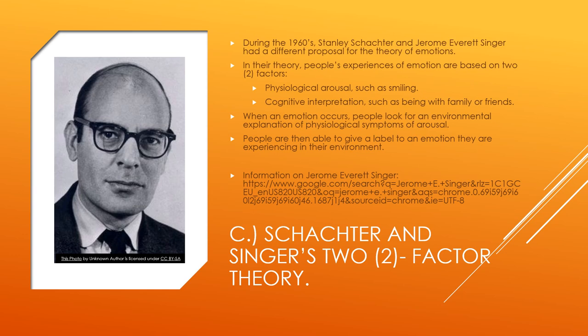The third theory is Schachter and Singer's Two-Factor Theory, developed in the 1960s by Stanley Schachter and Jerome Everett Singer. In their theory, people's experience of emotion is based on two factors: physiological arousal — such as smiling — and cognitive interpretation — such as being with family or friends. When an emotion occurs, people look for an environmental explanation of their physiological symptoms of arousal. For example, smiling at a party with friends, you might say you were happy to see them.